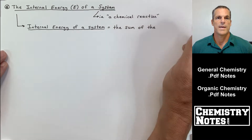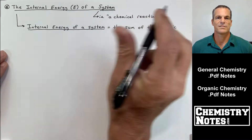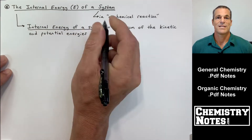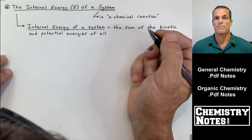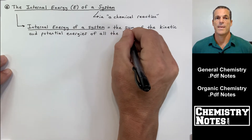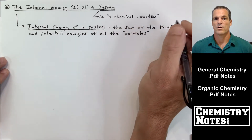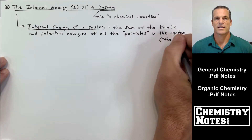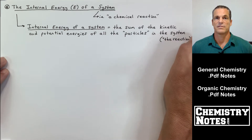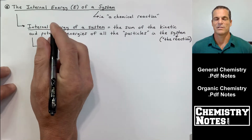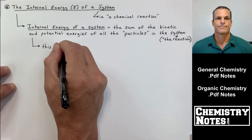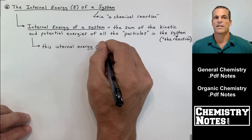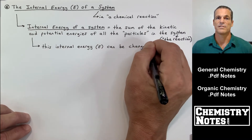Page one: the internal energy of a system. A system is like a chemical reaction. The internal energy of a system is equal to the sum of the kinetic and potential energies of all the particles in the system. A system is like the chemical reaction — it's the reactants and the products. We'll define system and surroundings in just a second.